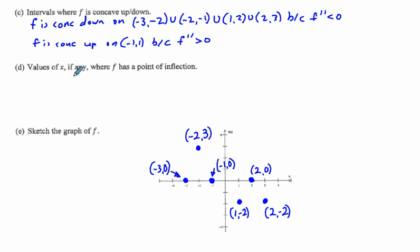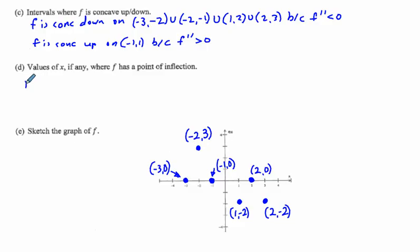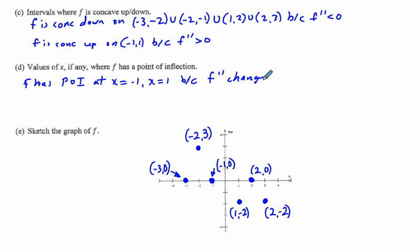For part D, values of x where f has a point of inflection — we look for changes in concavity, either from down to up or up to down. We see those only at x = −1 and x = 1. So f has points of inflection at x = −1 and x = 1, because f double prime changes from negative to positive, or from positive to negative.